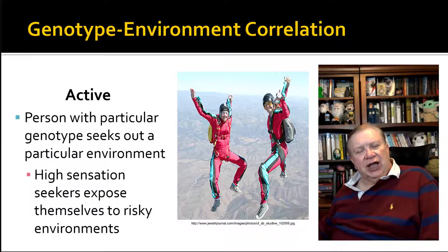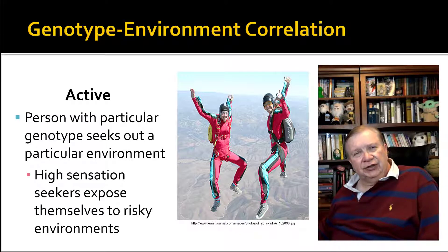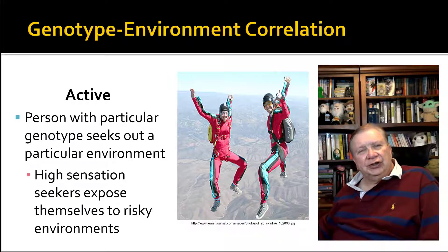Sensation seekers lack a brain chemical — monoamine oxidase, or MAO — and their brains produce MAO when they do high-risk things. So when you see someone doing something dangerous like skydiving, bungee jumping, or even motorcycle riding, they're self-medicating; they're producing their own MAO. Kind of an interesting notion.